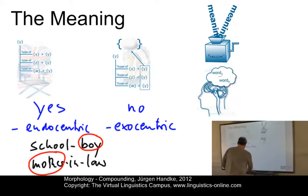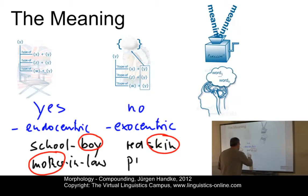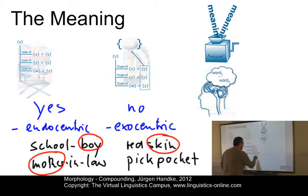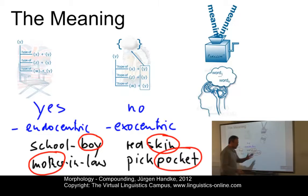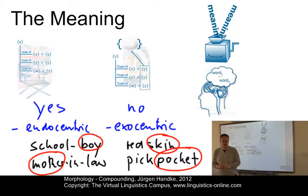Exocentric compounds would be something like 'redskin', where the head 'skin' does not really determine the meaning. Neither does it in 'pickpocket', where the head would be on the right-hand side — perhaps it's nowhere really in this case. A pickpocket is not a type of pocket. So let us illustrate these two main semantic types of compounds.